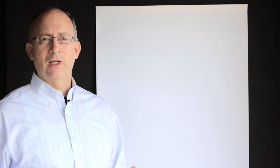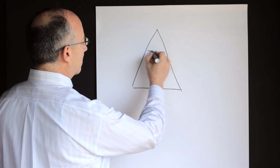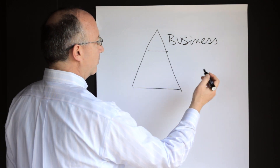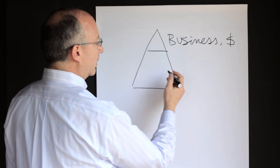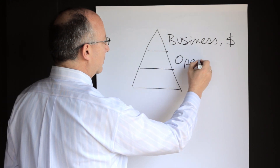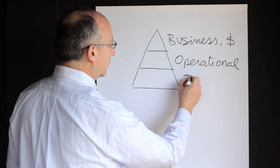In order to understand the problems companies face, it is useful to think about them in three levels and classify them in three levels. Those levels are business, operational, and procedural. This is how you may think about them in the shape of a pyramid. At the top are the business level type problems, which are usually related with money and have a financial impact or financial characteristics. Second, we have operational type of problems, and finally, at the lowest, most basic level, we have procedural type of problems.